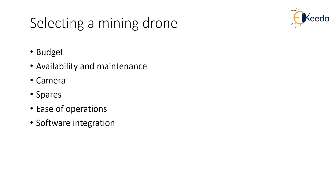Next is the camera. Since all your data depends on capturing images, you want your camera to be the best quality — do not compromise on it, as that will reduce the accuracy of your images and generated data. Spares are also very important because in a mining environment there can be rough landings and turbulent winds, sometimes causing the drone to crash. The most important spares are the body and the propellers of the drone — always have these available to avoid any stoppage of work during a mining survey.